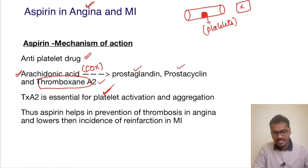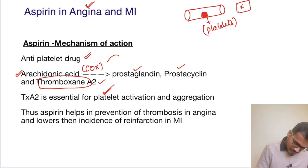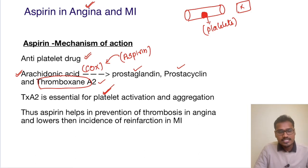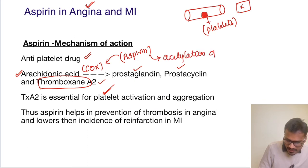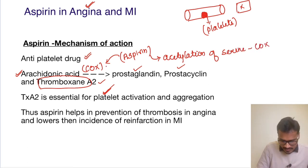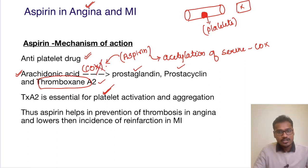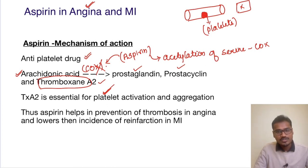Aspirin can do that. What aspirin does is it causes acetylation of an amino acid called serine — specifically, it causes acetylation of serine in the COX enzyme. As a result, COX is irreversibly inhibited. The platelet cannot produce new COX for its entire lifespan, so it cannot produce thromboxane A2, and platelet activation as well as aggregation comes down. Thus, by inhibiting the platelets, aspirin acts like an anti-platelet therapy.